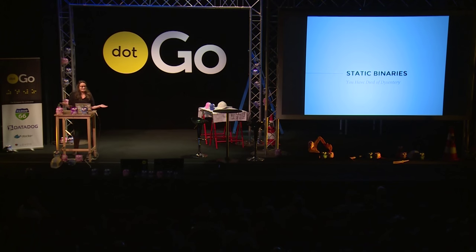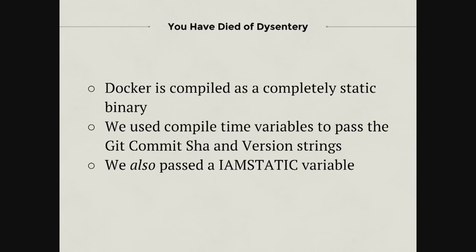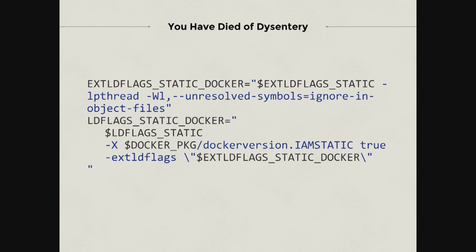So the first one involves static binaries, which hopefully some of you know. Docker is actually known for the fact that we distribute as a static binary, and it's really nice because it's just one thing — you can SCP it onto your server and you're done, or just curl it and you're there. So this one is: you have died of dysentery. We actually used to use compile-time variables for injecting the git commit SHA, the version, and also this very interesting I-am-static variable. The thing with this I-am-static variable is that it is a Boolean.